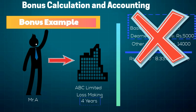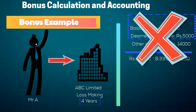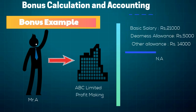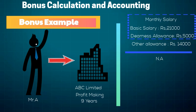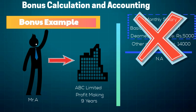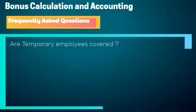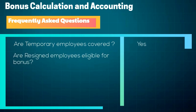If ABC Limited is four years old, no bonus is payable as the company is loss-making and has not completed five years. Now let's see another example: here Mr. A has a basic salary of 21,000 rupees. Since basic plus DA exceed 21,000, the company has no obligation to pay bonus to Mr. A. Remember, here we check monthly salary and not annual salary.